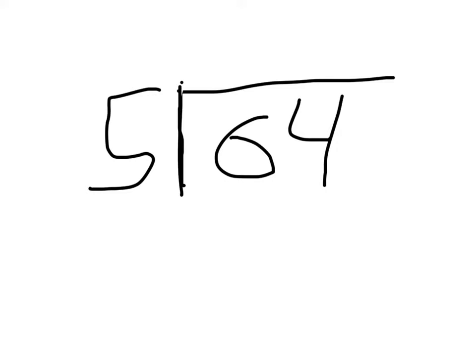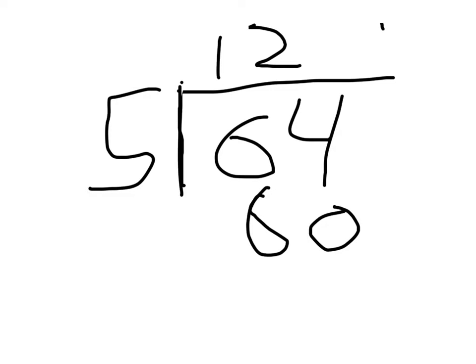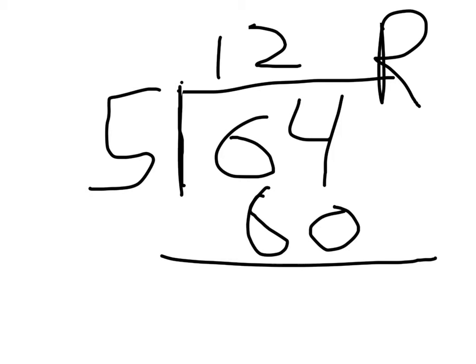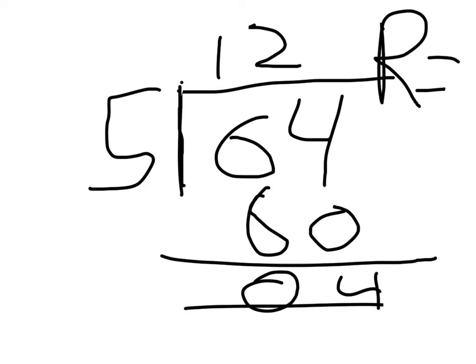It doesn't go higher than that, because if we add another 5 it's going to be 65. So we put 12 over here and write 60 down here. Then we write R for remainder and minus them: 4 stays, so the remainder is 4.